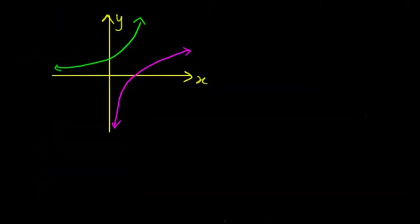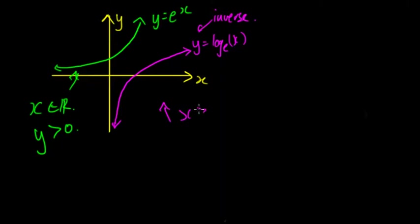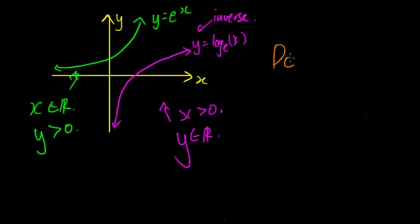In the green we have y = eˣ, and in the purple we have y = logₑ(x), which is the inverse of the green. The green spans all x, so the domain is all real numbers and the range is y > 0. But the purple has x > 0 and y is all real numbers. So the domain is x > 0 and the range is all real numbers. This correlation is not a coincidence — we've swapped the x and y values.